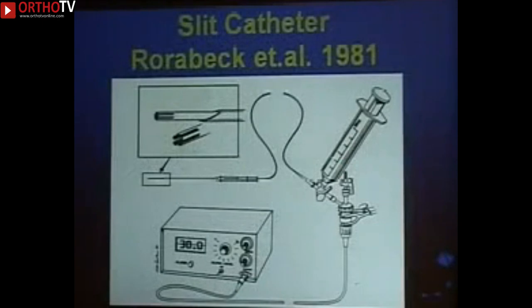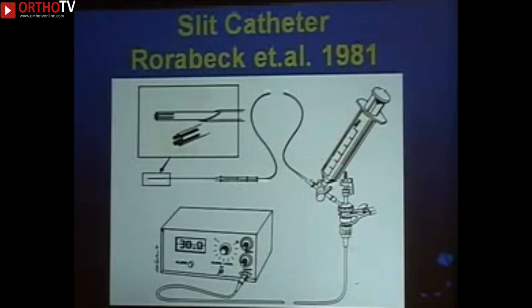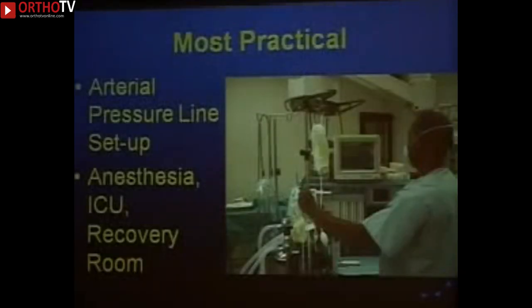Caesar Rober, whom I worked with from London, Ontario, decided to pull the wick out and make slits instead. Together we figured out that five slits of about three to four millimeters in length works just as well as the wick in increasing surface area, and it's a lot easier to manufacture — the slit catheter.